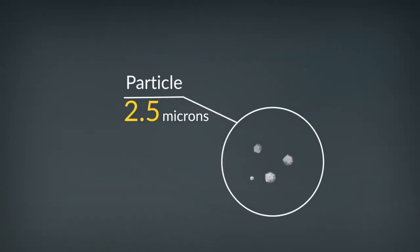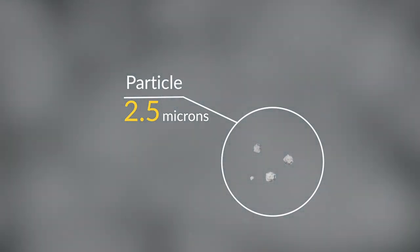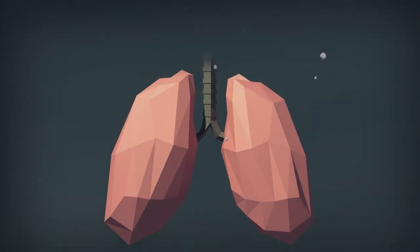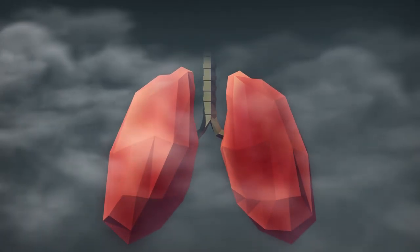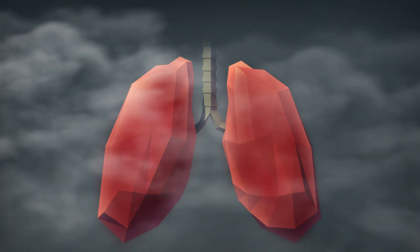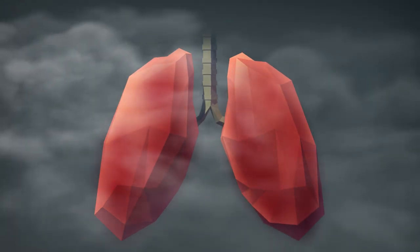The size of a particle has a big impact on its toxicity. Small particles, like those smaller than 2.5 microns, penetrate deep into the lungs and set off a cascade of systemic inflammation. Each of these particles is invisible, but collectively they create a dense, visible smog that is deadly.